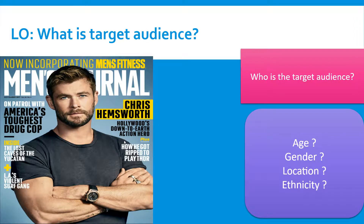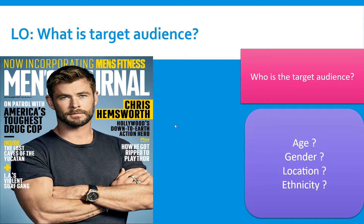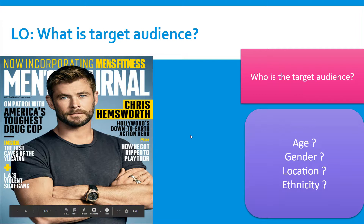This one is a bit more complex because we need to look at the text on this magazine cover. The age is probably people over 18, because it's about men's fitness. The gender, as it's men's fitness, is probably men. For location, reading the cover helps — it says 'America's toughest drug cop', 'LA's violent surf gang', 'Hollywood' — so the location is probably America, or more specifically Los Angeles.